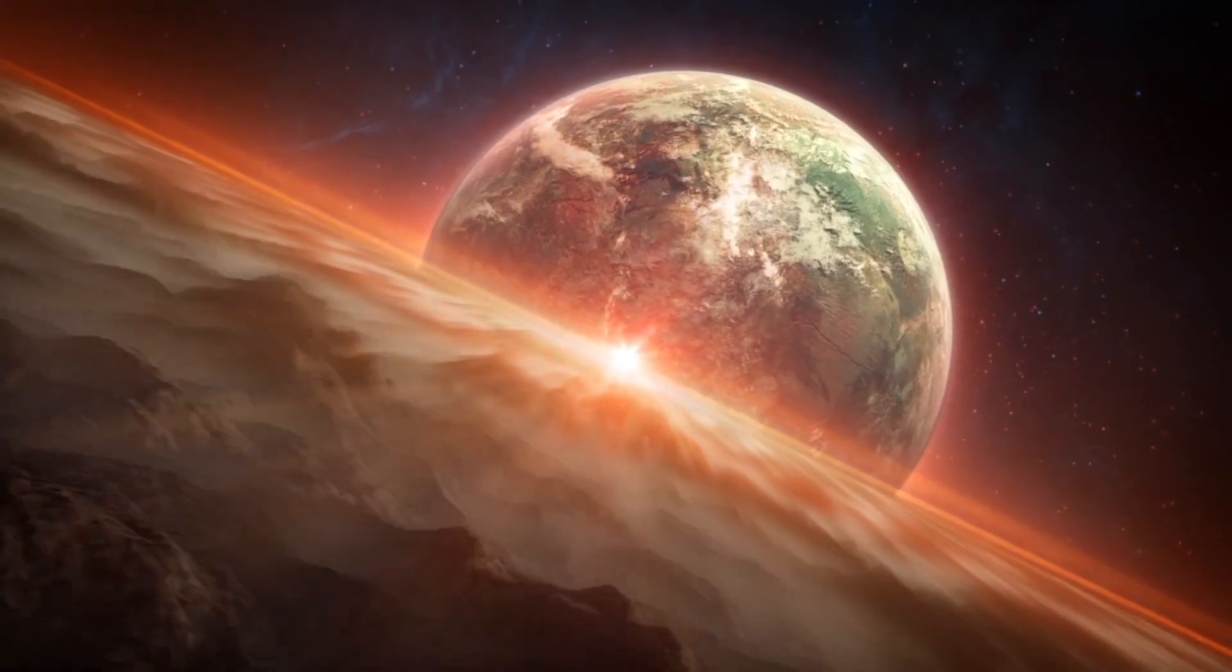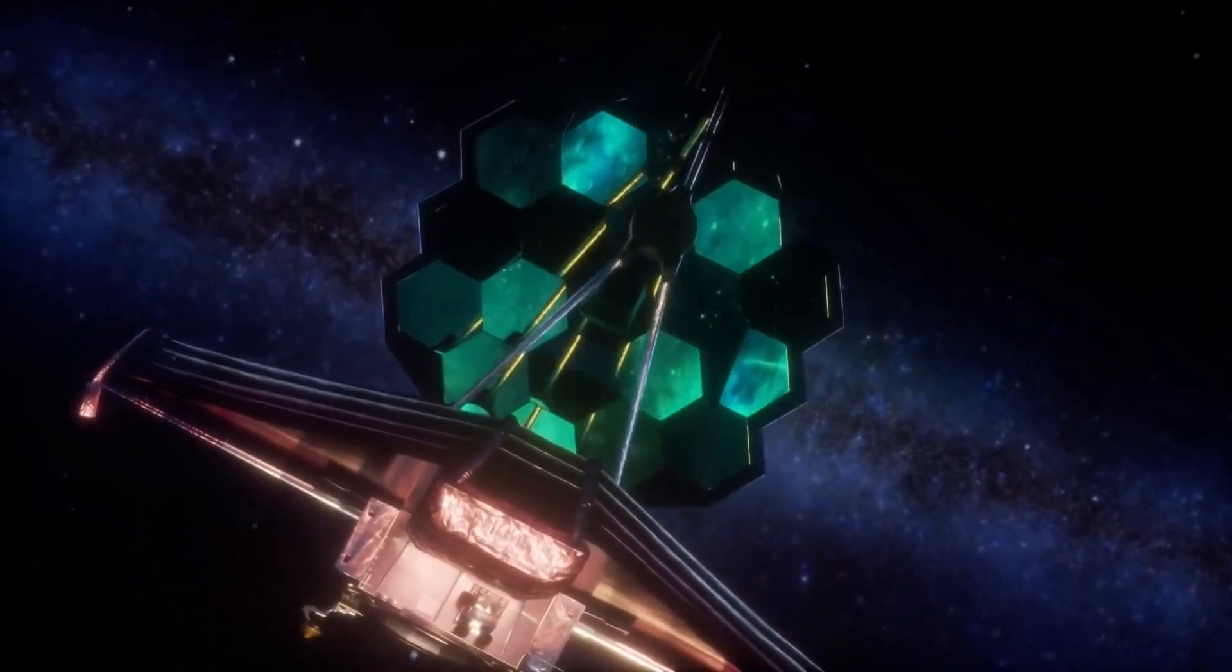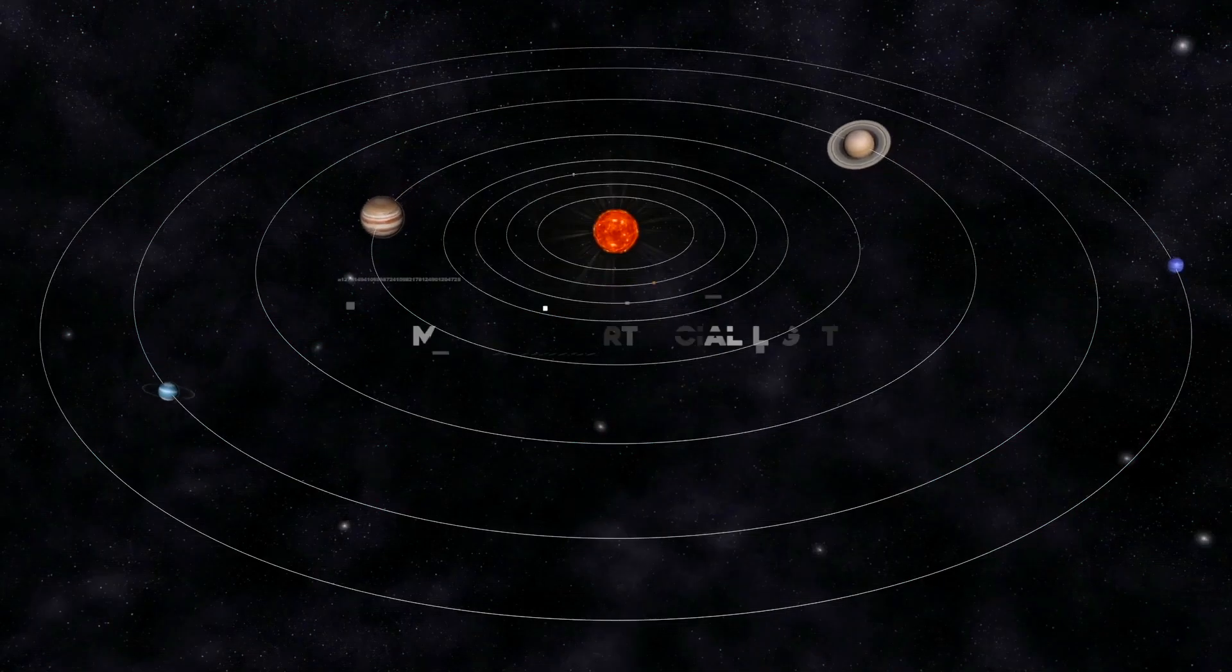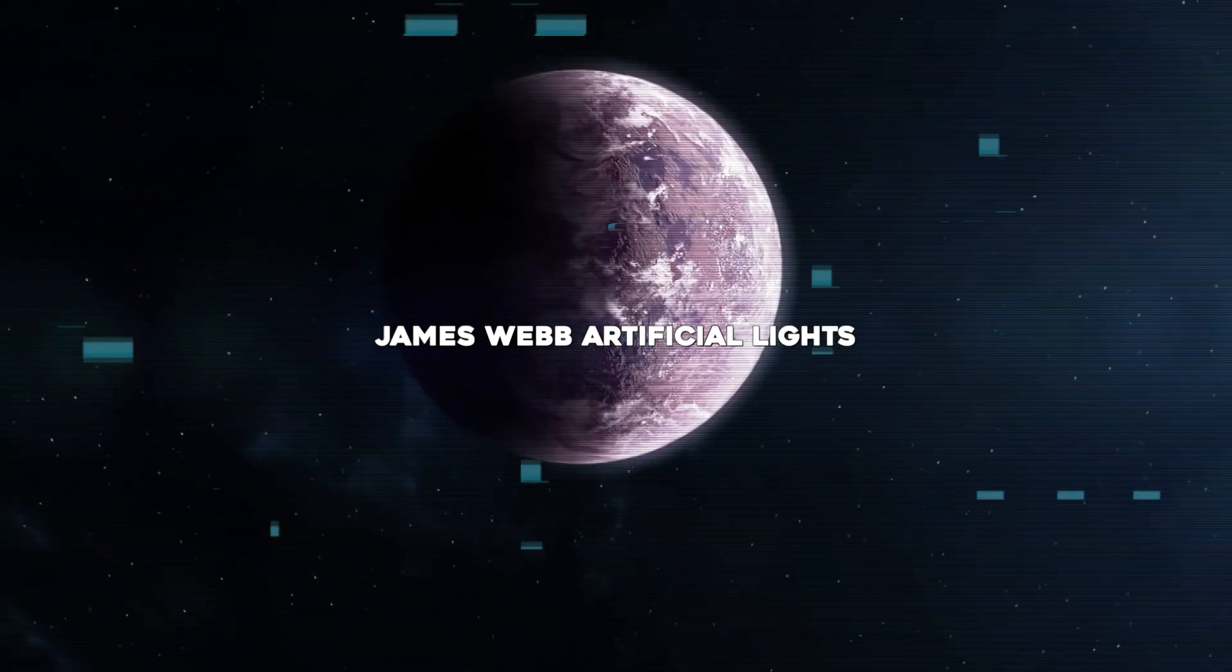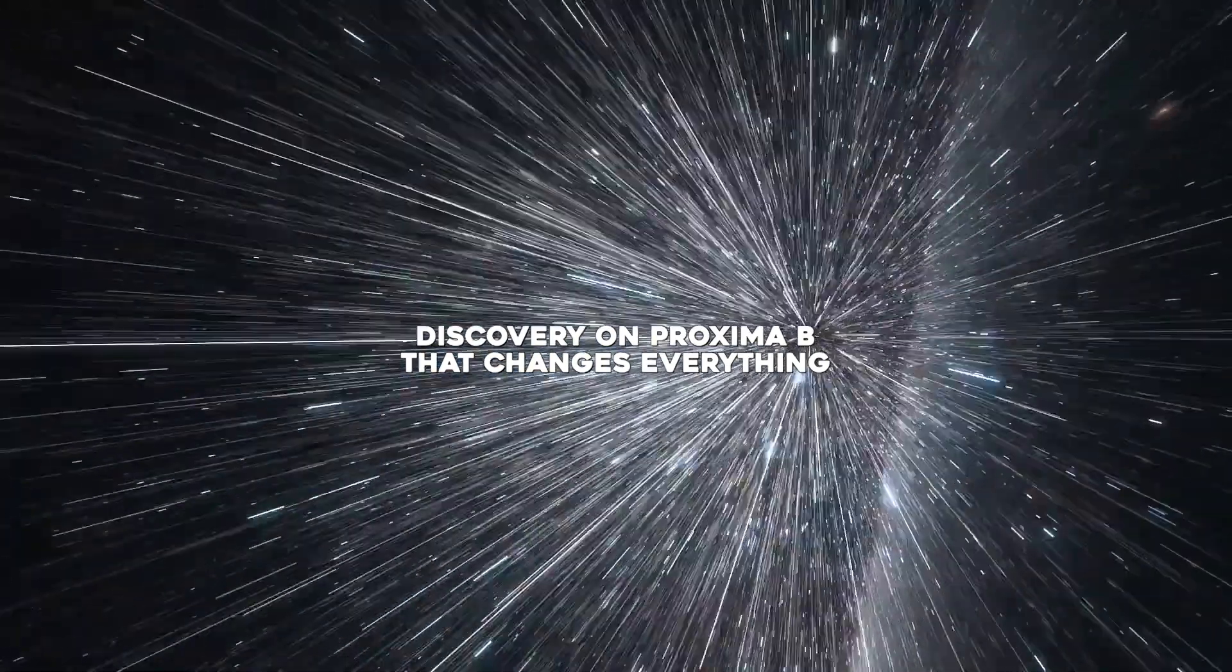Scientists want to know if the lights coming from Proxima B are due to aliens. So what will the JWST see when it focuses on the exoplanet? And how does it affect you?